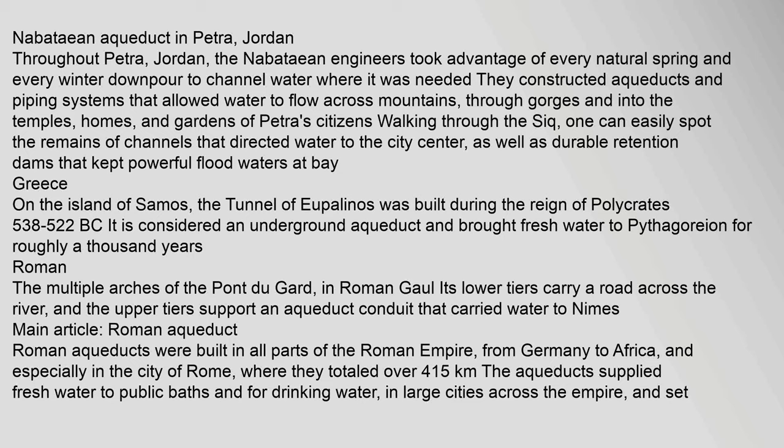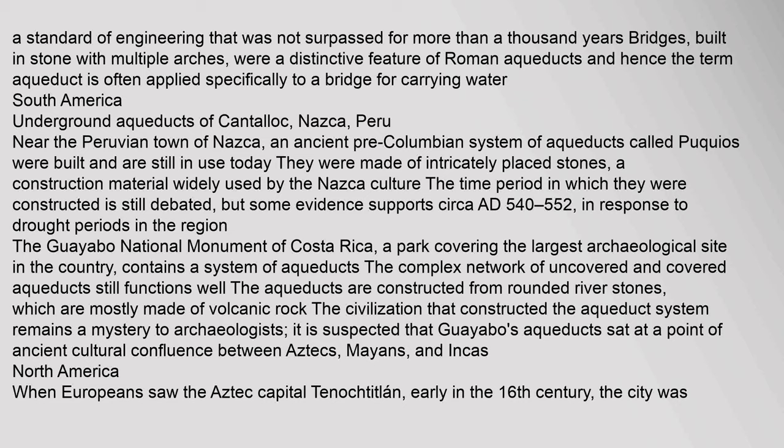On the island of Samos, the Tunnel of Eupalinos was built during the reign of Polycrates (538–522 BC). It is considered an underground aqueduct and brought fresh water to the Pythagoreans for roughly a thousand years. In Roman Gaul, the Pont du Gard's lower tiers carry a road across the river, while the upper tiers support an aqueduct conduit that carried water to Nîmes. Roman aqueducts were built in all parts of the Roman Empire, from Germany to Africa, and especially in the city of Rome, where they totaled over 415 kilometers. This was a standard of engineering not surpassed for more than a thousand years. Bridges built in stone with multiple arches were a distinctive feature of Roman aqueducts.